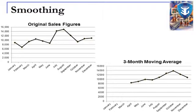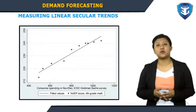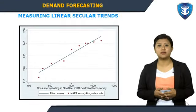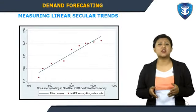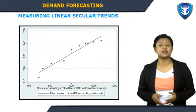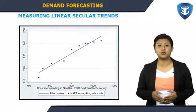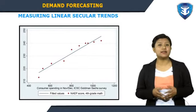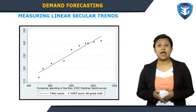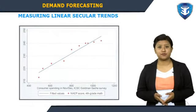If the secular trend is linear, there are two methods commonly used to measure it: linear regression analysis and moving average.